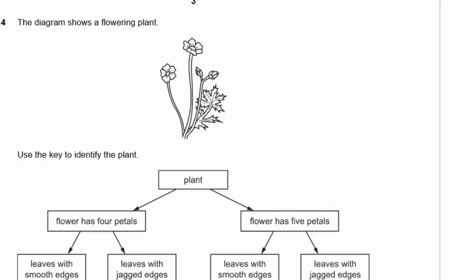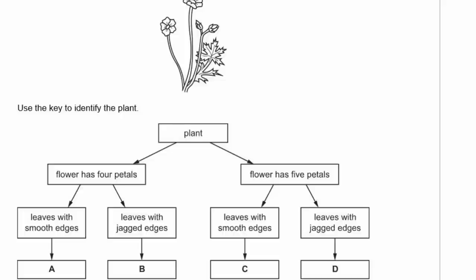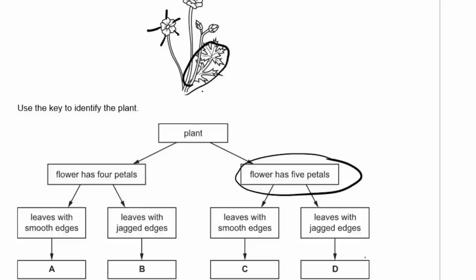Question 4: The diagram shows a flowering plant. Use the key to identify the plant. It is a plant — yes, we know that. Does the flower have four petals or five petals? Counting them: one, two, three, four, five — so we are on the five-petals branch. Are the leaves smooth-edged or jagged? These leaves look jagged, so the answer is D.